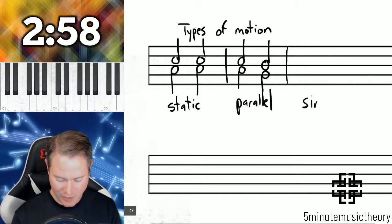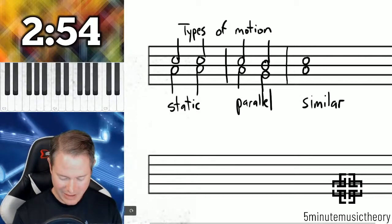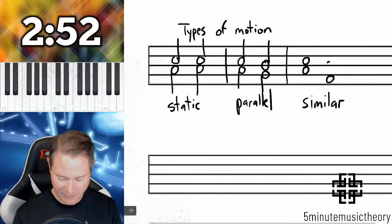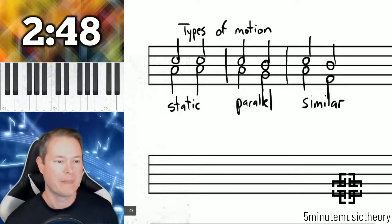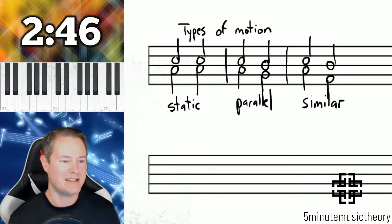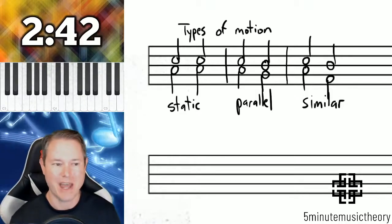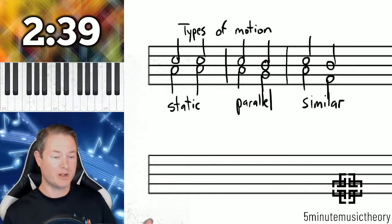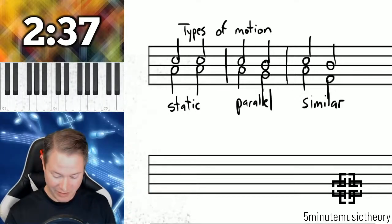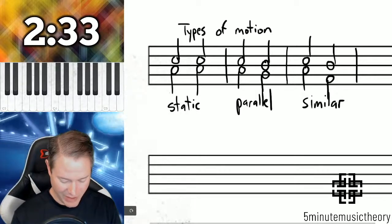Next is similar motion. Now similar motion is when voices move in a similar direction but a different distance. So here's an example of similar motion. So notice we have A and C, and that's a third, and that's moving into a fourth with the B and the F there, but they're both moving the same direction. So we have similar motion, but it's not parallel, so make sure we make the distinction between those two.